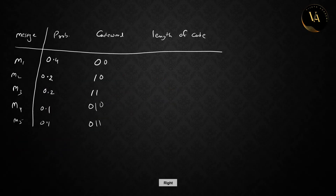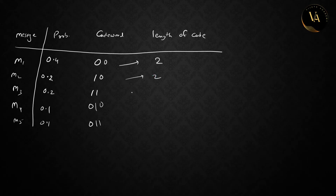Next, find the length of code. Length of code means number of bits. The lengths are: M1 = 2, M2 = 2, M3 = 2, M4 = 3, M5 = 3. Now find the average length.